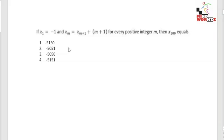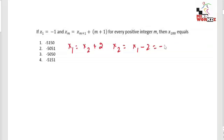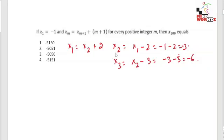Next question: x₁ = -1 and xₘ = xₘ₊₁ + (m+1) for every positive integer m. Find x₁₀₀. All options are negative, so the answer will definitely be negative. Understand the pattern: put m=1, so x₁ = x₂ + 2, giving x₂ = x₁ - 2 = -1 - 2 = -3. Similarly, x₃ = x₂ - (m+1) where m+1=3, so x₃ = -3 - 3 = -6.